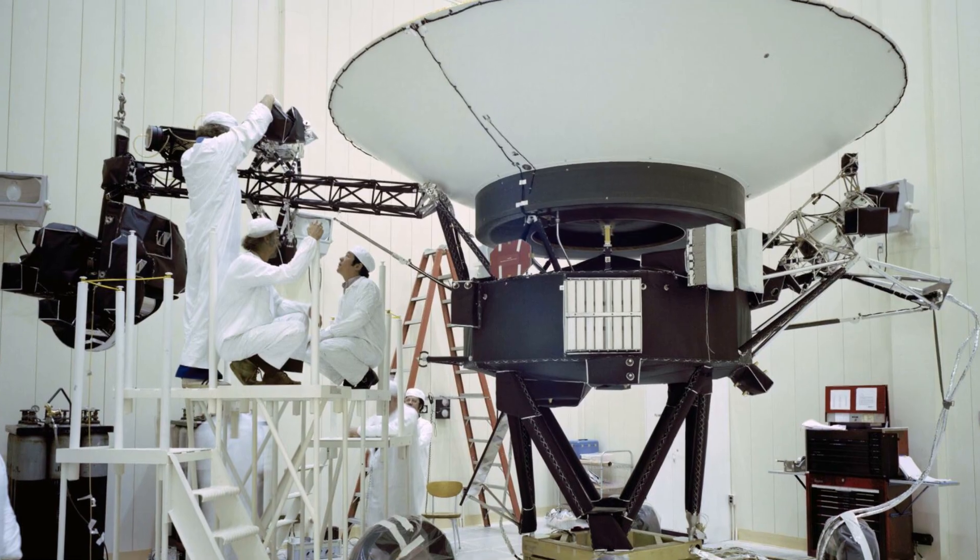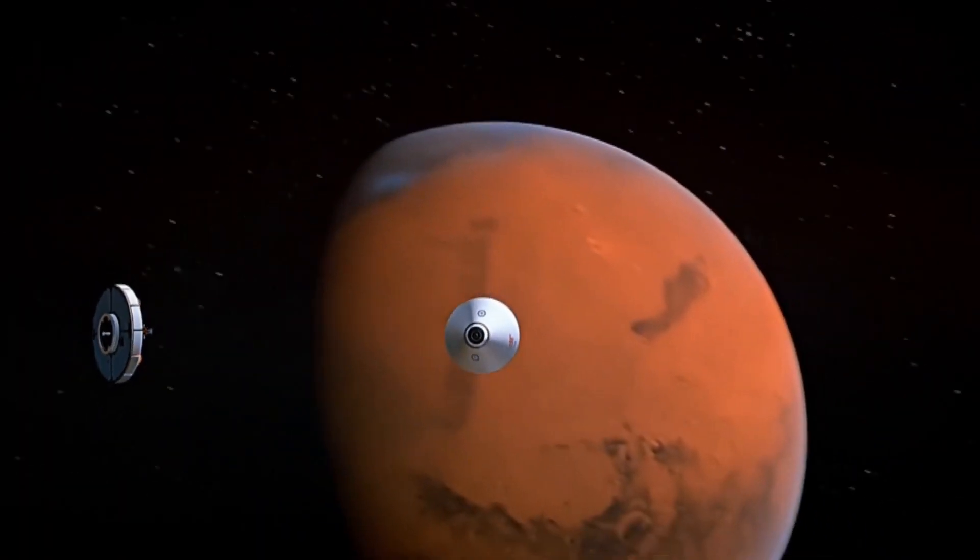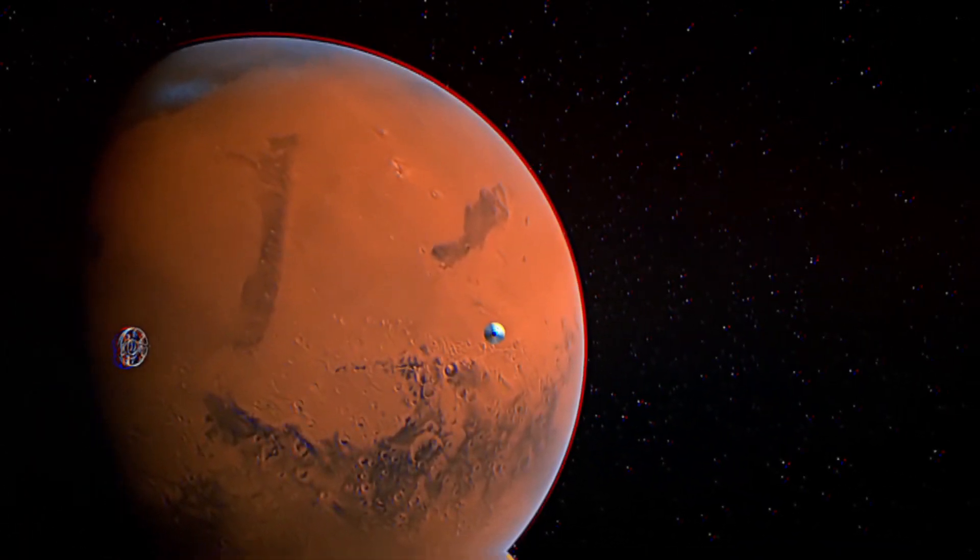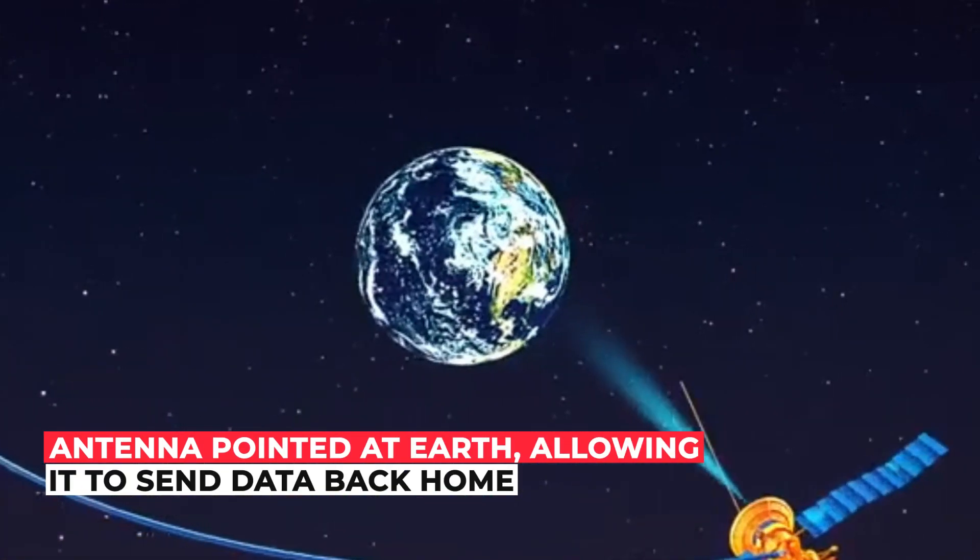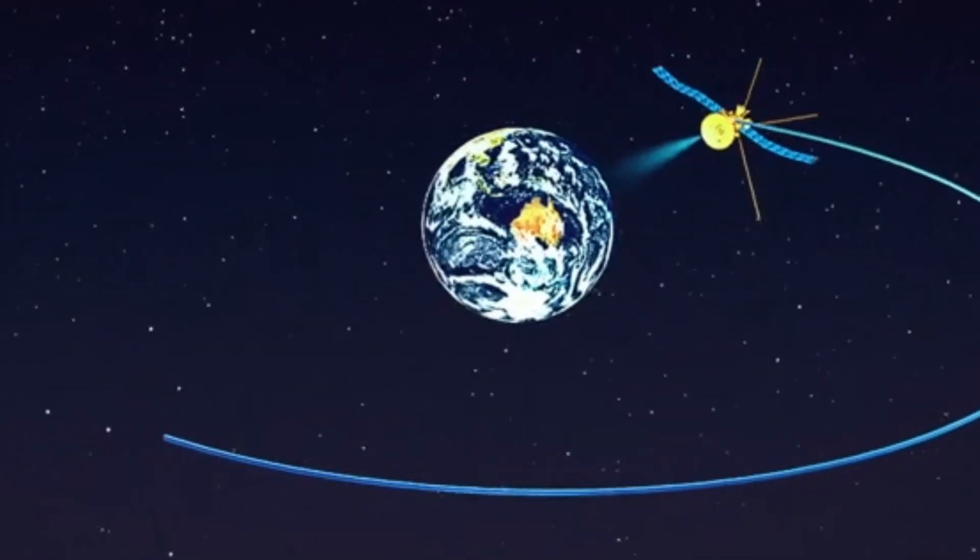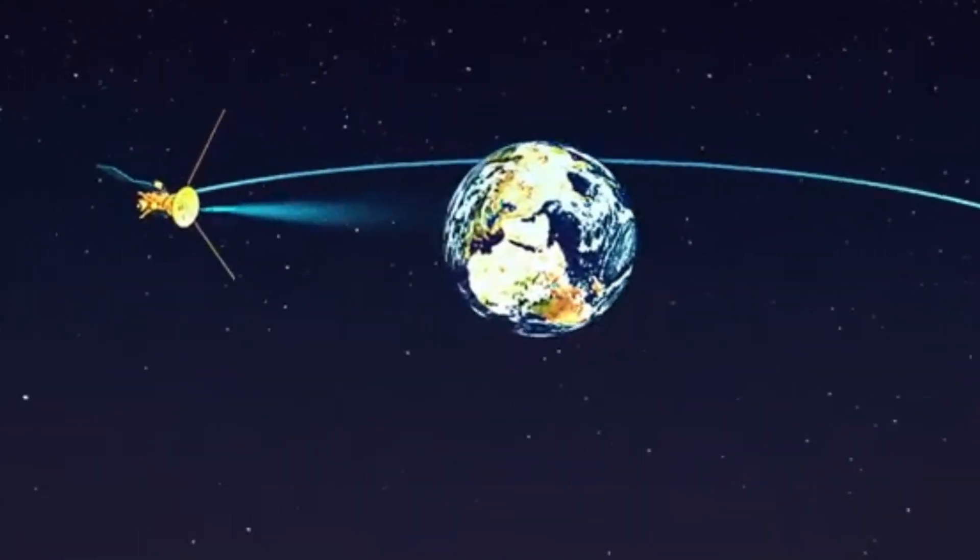The problematic data come from the attitude articulation and control system, or AACS, which is onboard equipment that measures, reports and changes the vehicle's position in space. The system maintains an antenna pointed at Earth, allowing it to send data back home. The new bizarre situation calls the long-duration mission's future into question.